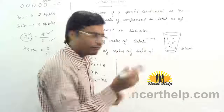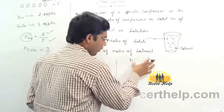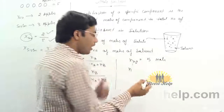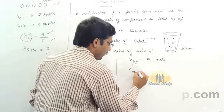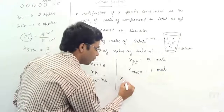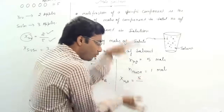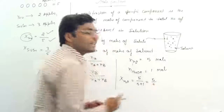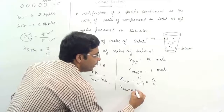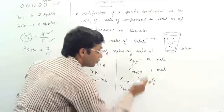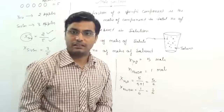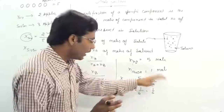Let's take a small example. We are making a mixture where the solvent is water. Number of moles of H2O is 5 moles and number of moles of NaOH is 1 mole. So mole fraction of H2O equals number of moles of H2O divided by total number of moles, which is 5 plus 1, giving 5 by 6. Similarly, mole fraction of NaOH equals 1 divided by total moles 6, giving 1 by 6.